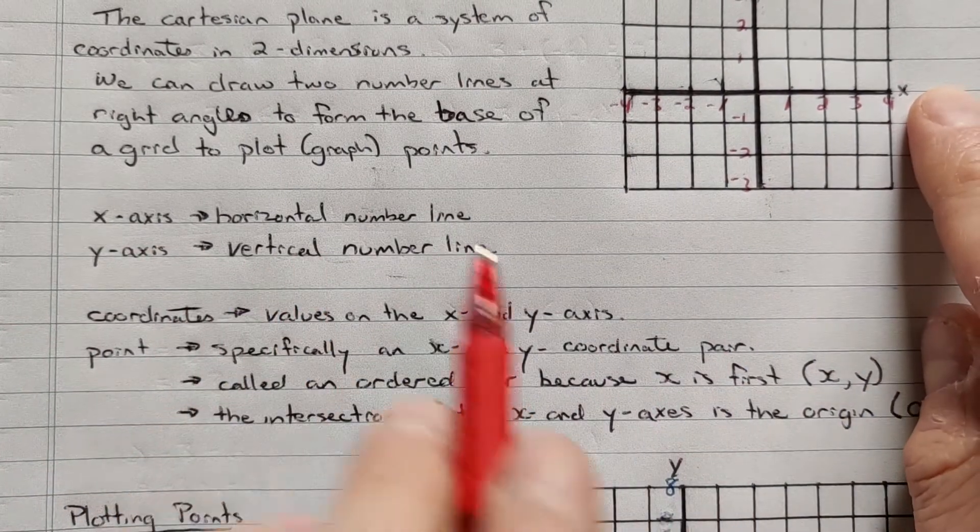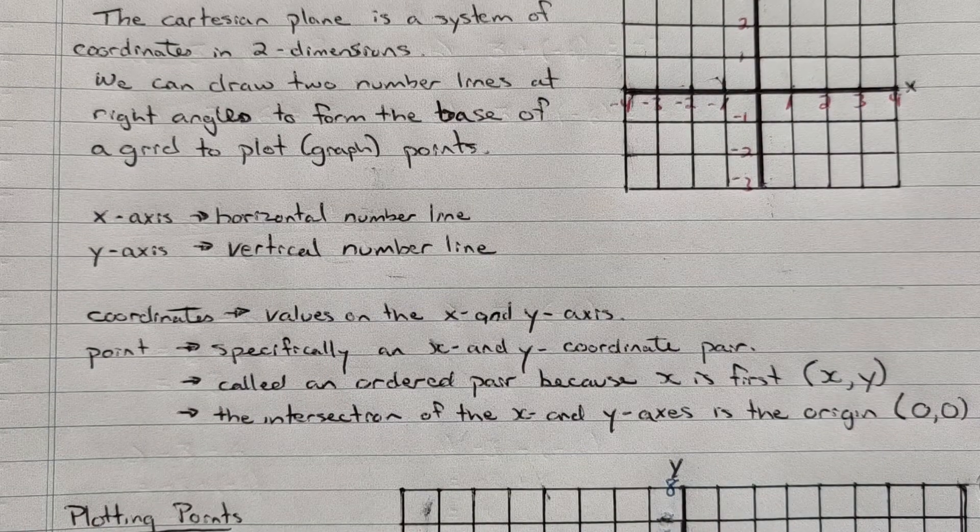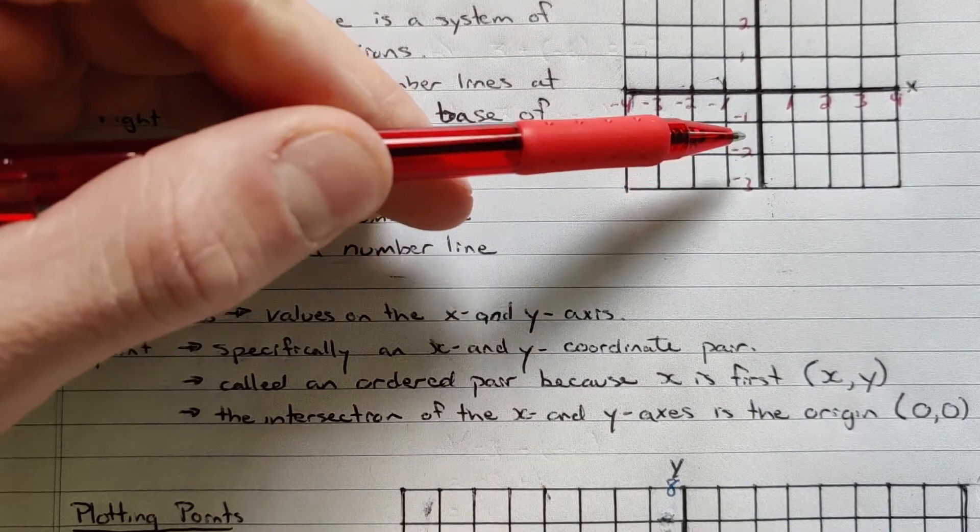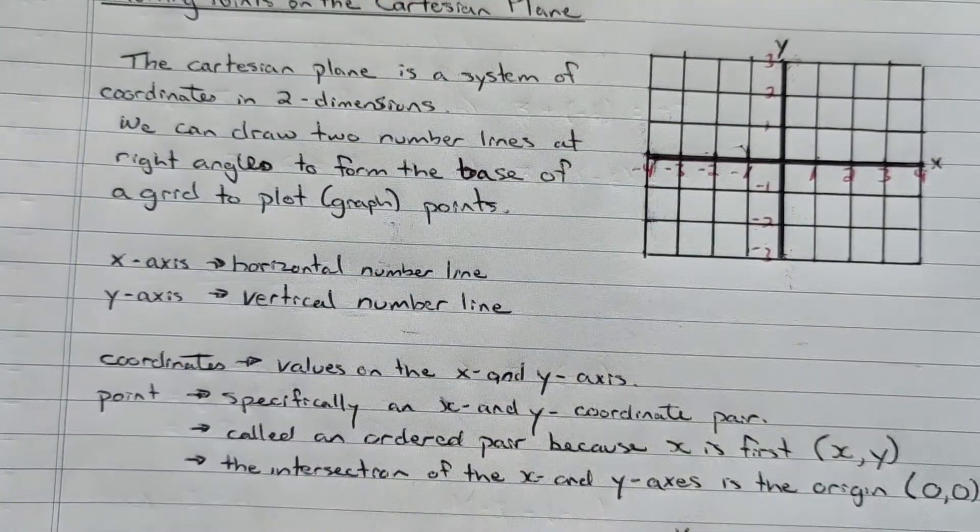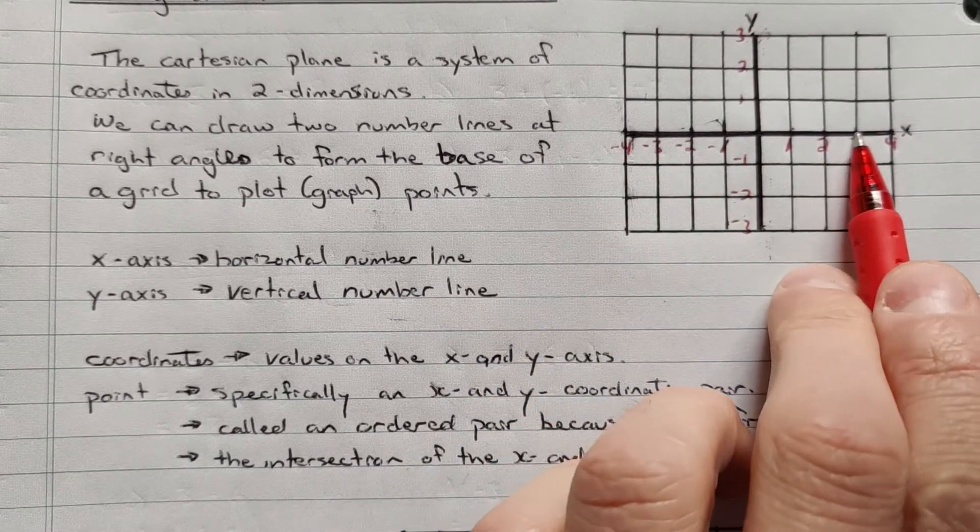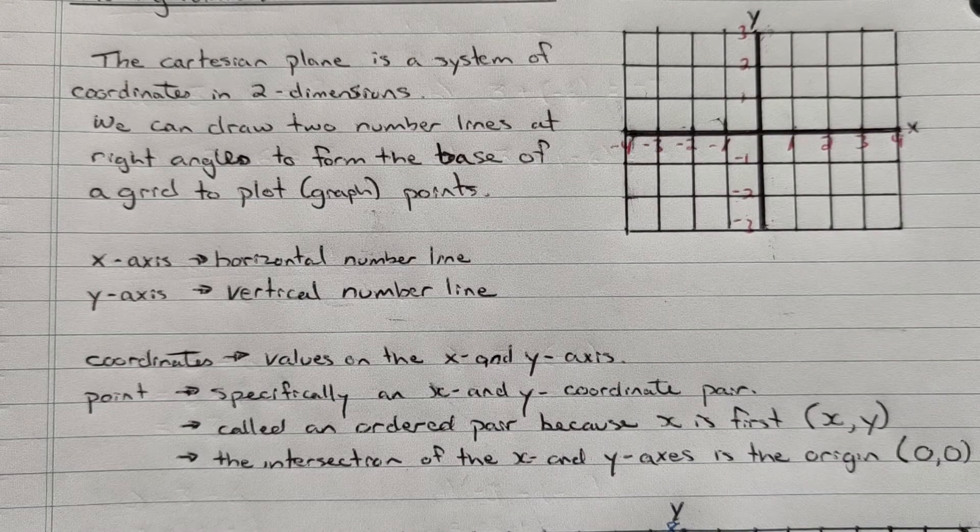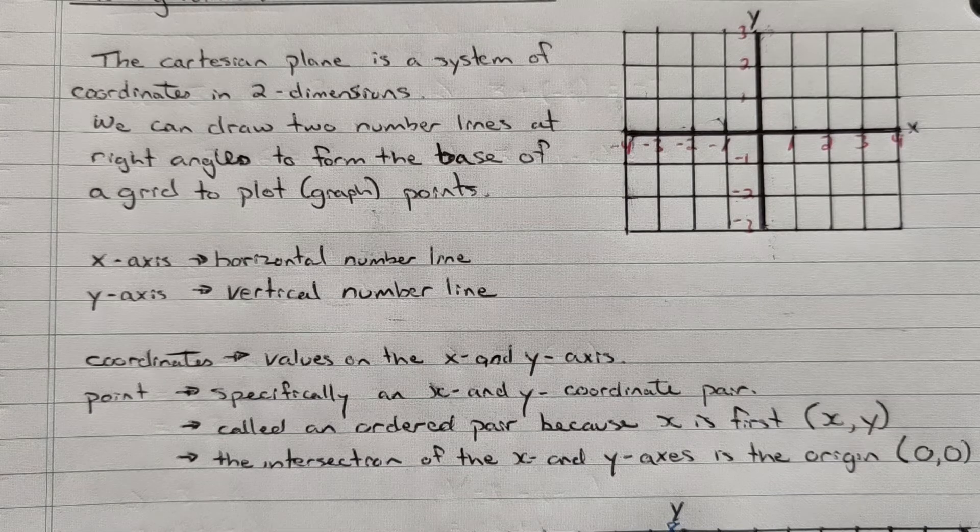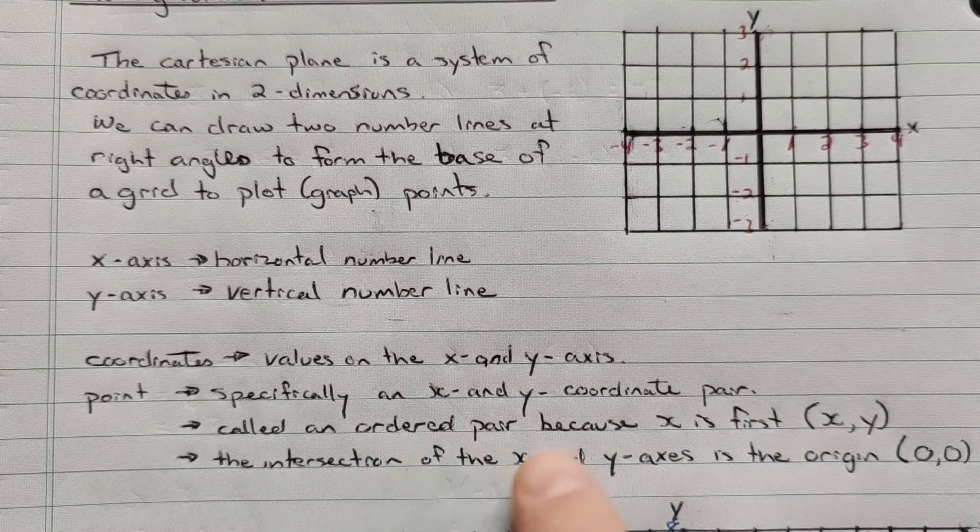So we have our x axis, our horizontal number line, our y axis, our vertical number line. Coordinates are values on the x and y axis. So negative two here, that's a y coordinate. It's on the y axis. This is the y axis going up and down that y number line. That's a negative two. So that's the y coordinate. X coordinate of three over here because it's three on the x along the x axis. A point is specifically an x and y coordinate pair. So we have a pair of numbers. The first one is x. So it's called an ordered pair.